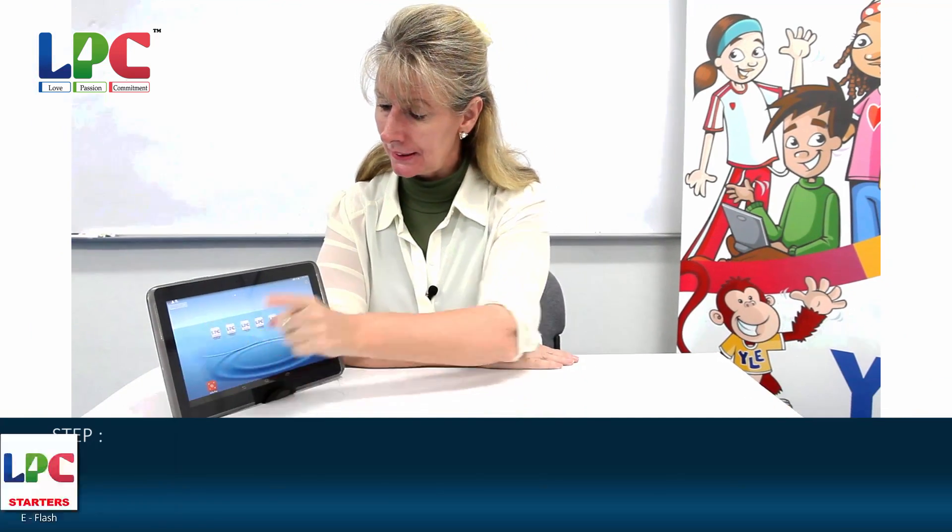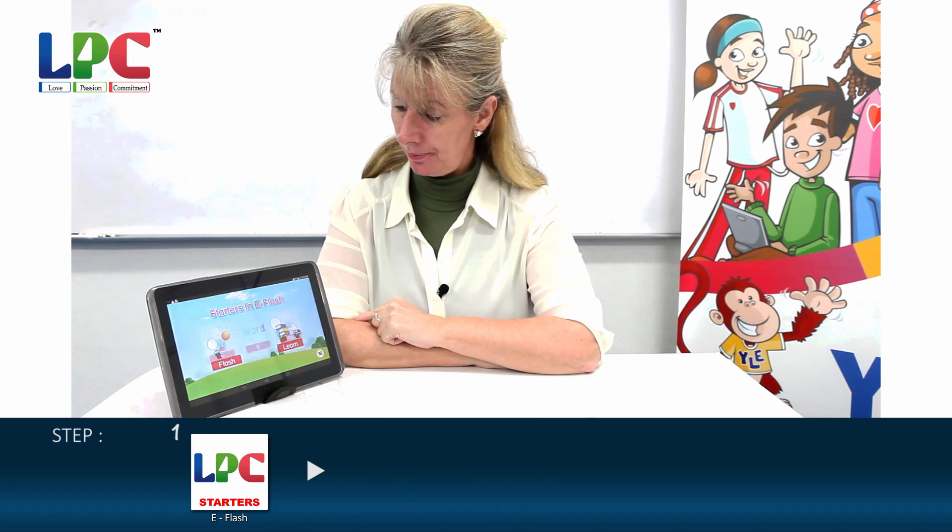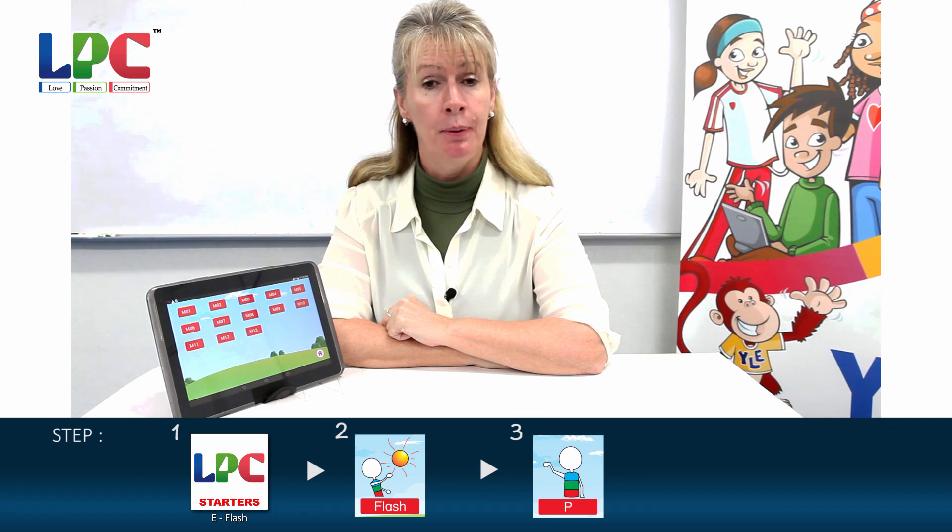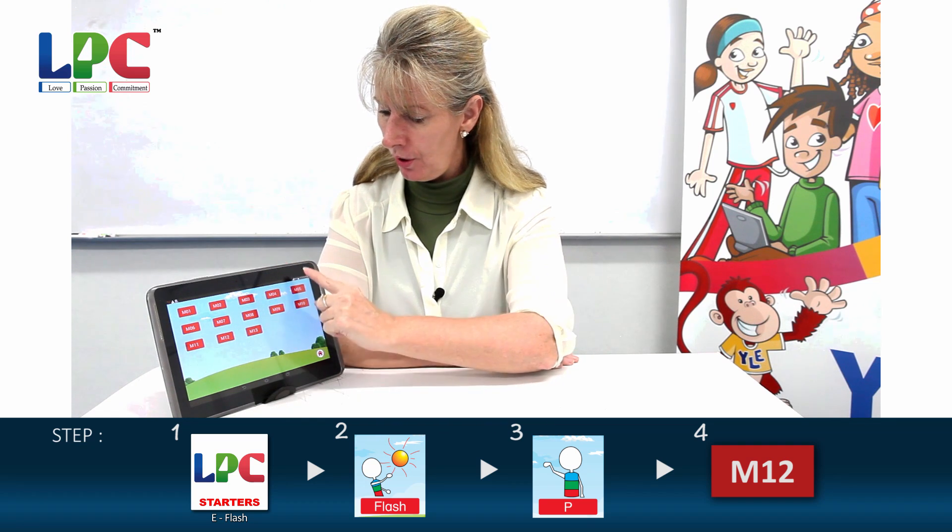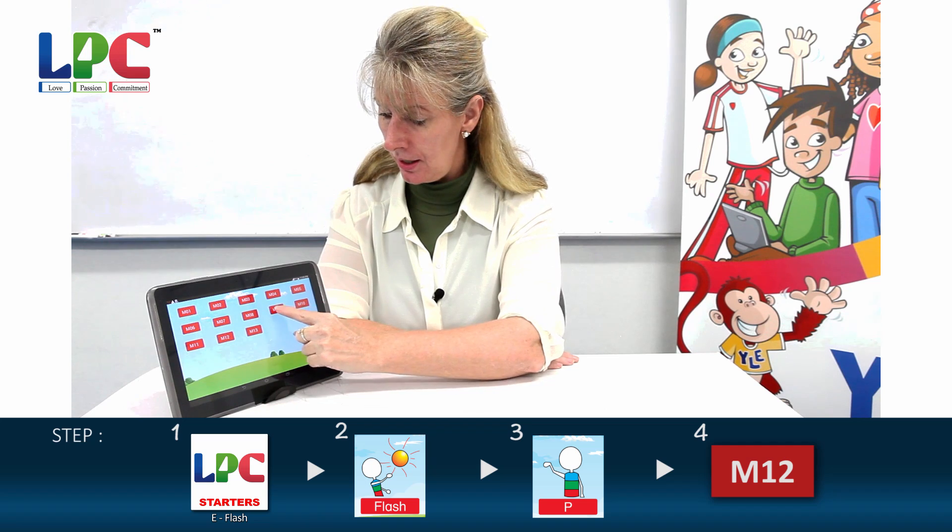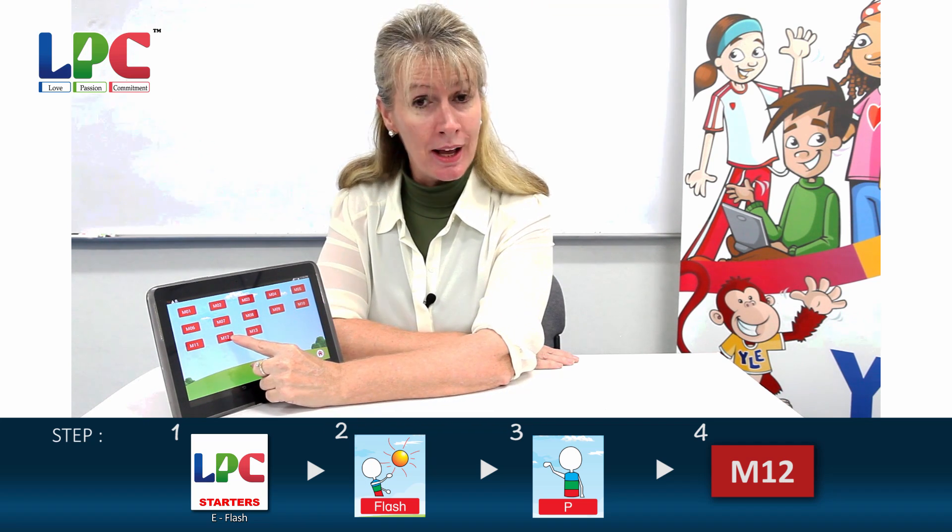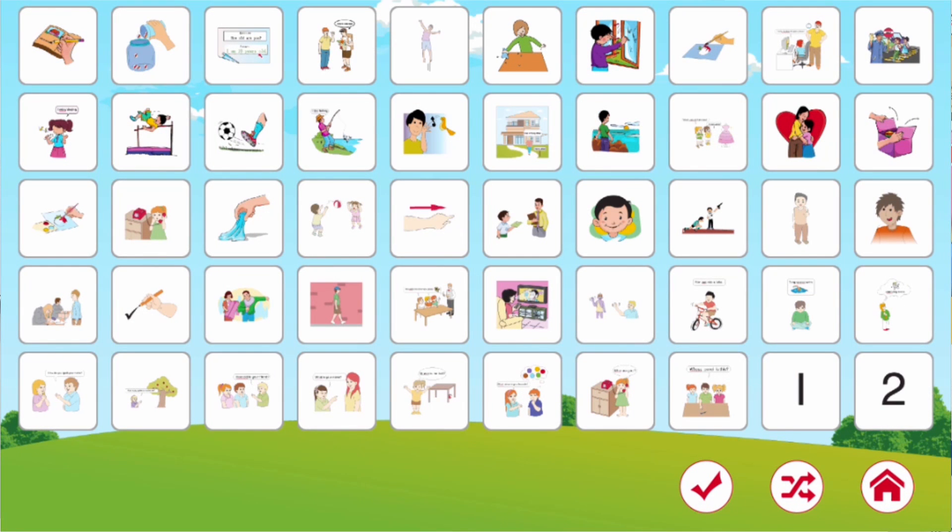Now we want starters, flash, P for pictures and we're looking for table 12. One, two, three, four, five, six, seven, eight, nine, ten, eleven, twelve. There! And this is what we're going to look at now.